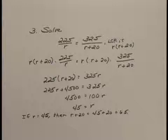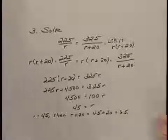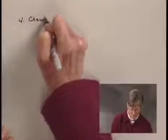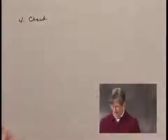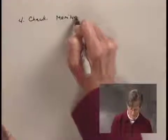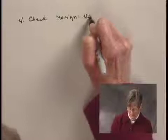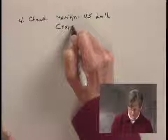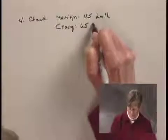And now let's check and see if these speeds work in the original problem as it was stated. The fourth step in the process is to check the solution in the original problem. Now let's think about what we have. We've said that Marilyn's speed was 45 kilometers per hour and Craig was traveling 65 kilometers per hour.